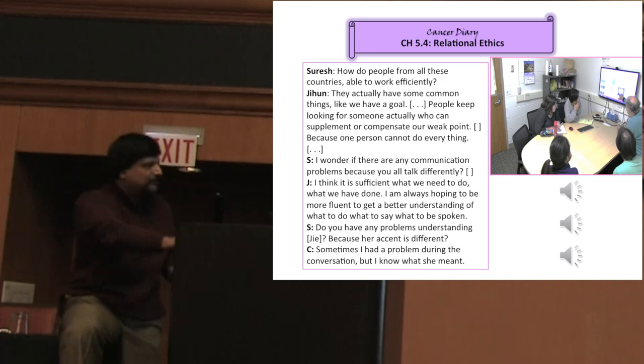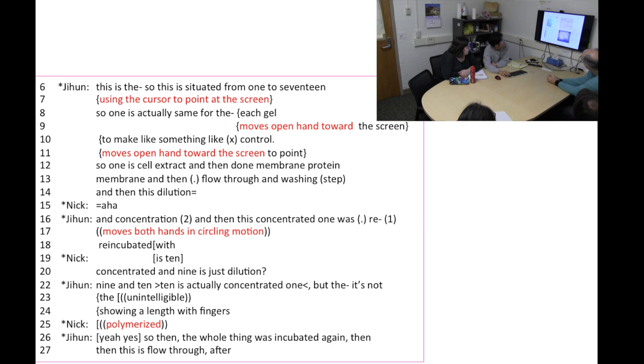[Video audio plays: This is seeded from 1 to 17. So, 1 is actually the same for each gel, to make like internal control. So, one is cell extract, and then non-membrane protein, membrane, and then flow through, and the washing step, and then elution, and then concentration. Uh-huh. And then, this concentrated one was re-incubated with...]